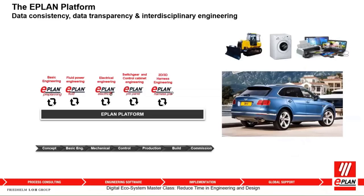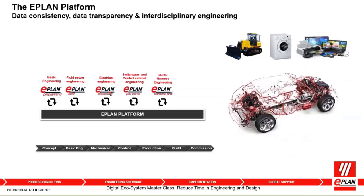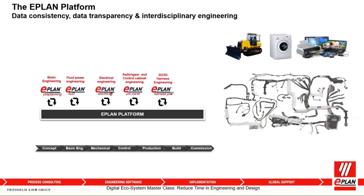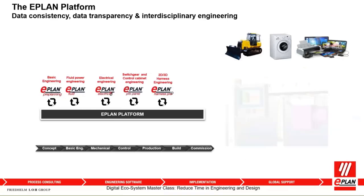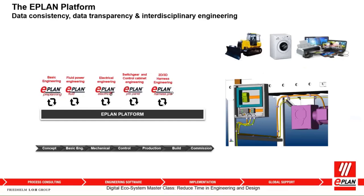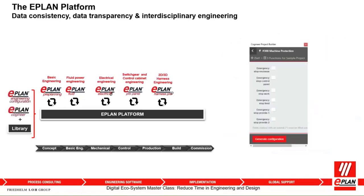Moving on to Harness Pro D — for harness design, whether 2D or 3D, we need to create nail board documentation and build material information. There may be a need to communicate this information coming in from the electrical environment or going out to the harness environment and back. This is crucial for all departments — nail board design, pre-production, and 3D modeling in closed spaces. It's all part of the EPLAN platform environment.